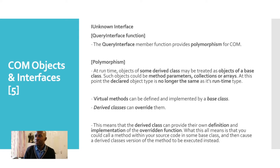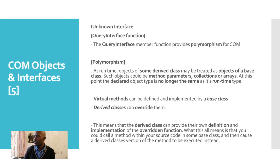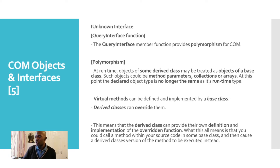To go a little bit deeper into the implementation, virtual methods can be defined and implemented by a base class — you may have seen the virtual keyword if you're a C Sharp developer. Derived classes can override them, providing their own definition and implementation of the overridden function. This means that a derived class can provide its own version of the virtual method, and you could call a method in the base class while a derived class executes its own version instead.